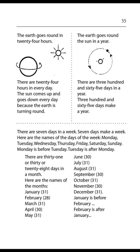January, February, March, April, May, June, July, August, September, October, November, December. January is before February. February is after January.